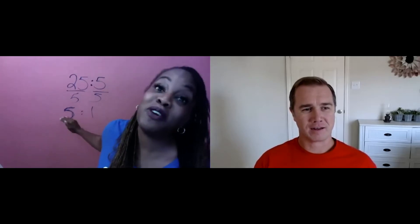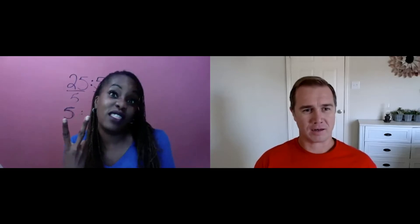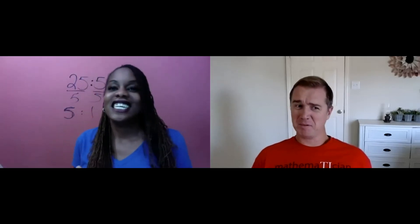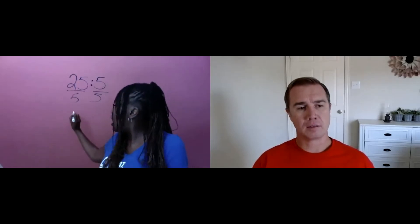That's my favorite way of writing ratios, but there are two other ways you can write them. Instead of the colon, I could write it as a fraction—five over one. The value of that ratio is the same, and the units are the same: five grapes over one grape. It's still the same ratio, just written as a fraction.